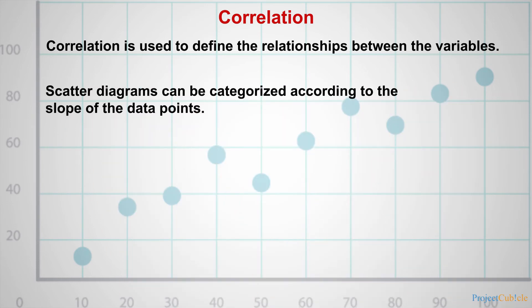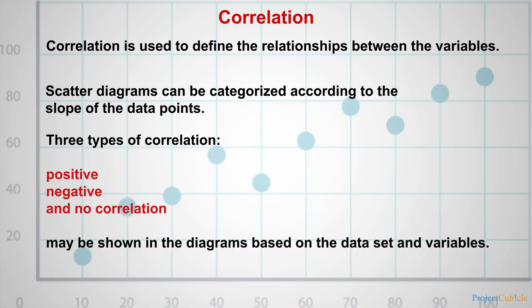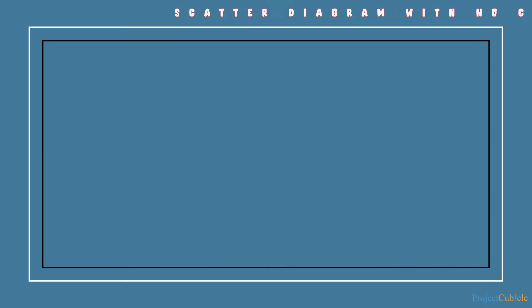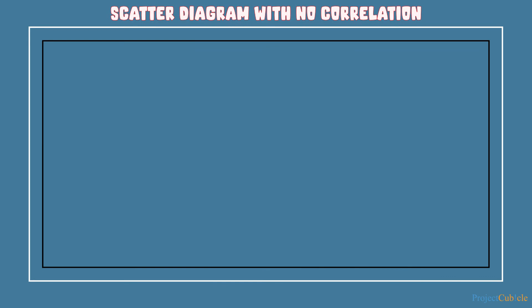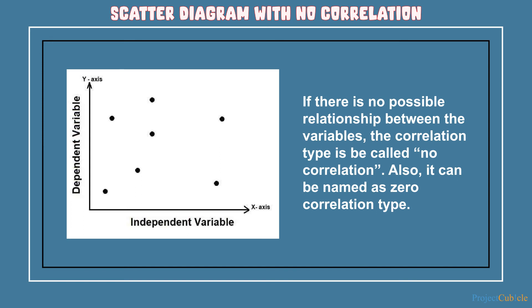Scatter diagrams can be categorized according to the slope of the data points. Three types of correlation — positive, negative, and no correlation — may be shown in the diagrams based on the data set and variables. If there is no possible relationship between the variables, the correlation type is called no correlation, also known as zero correlation.